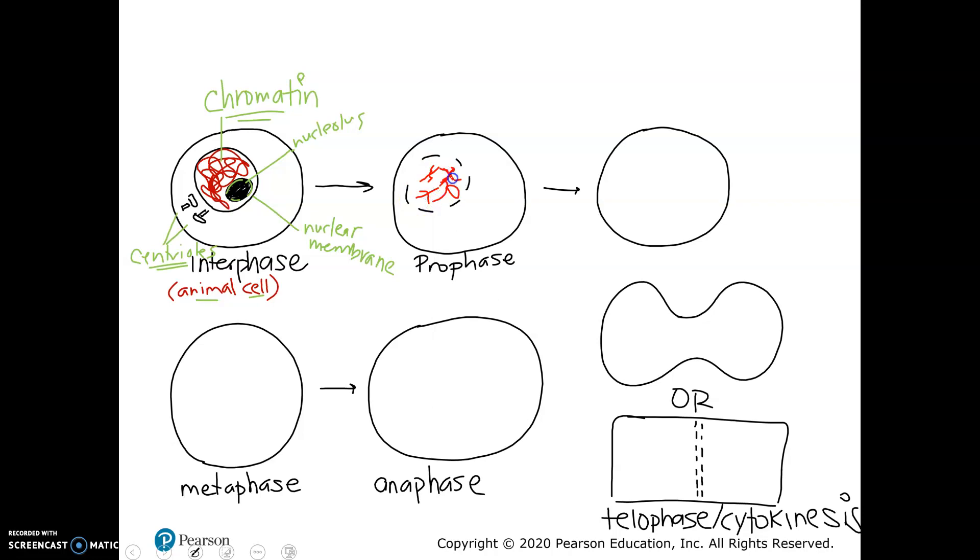They look kind of thick because what's really happening is these thin, long pieces of string are now coiling super tight. And they're taking up a lot less space as a chromosome. That's so that the chromosomes can get passed on without anything getting damaged or lost in the process.